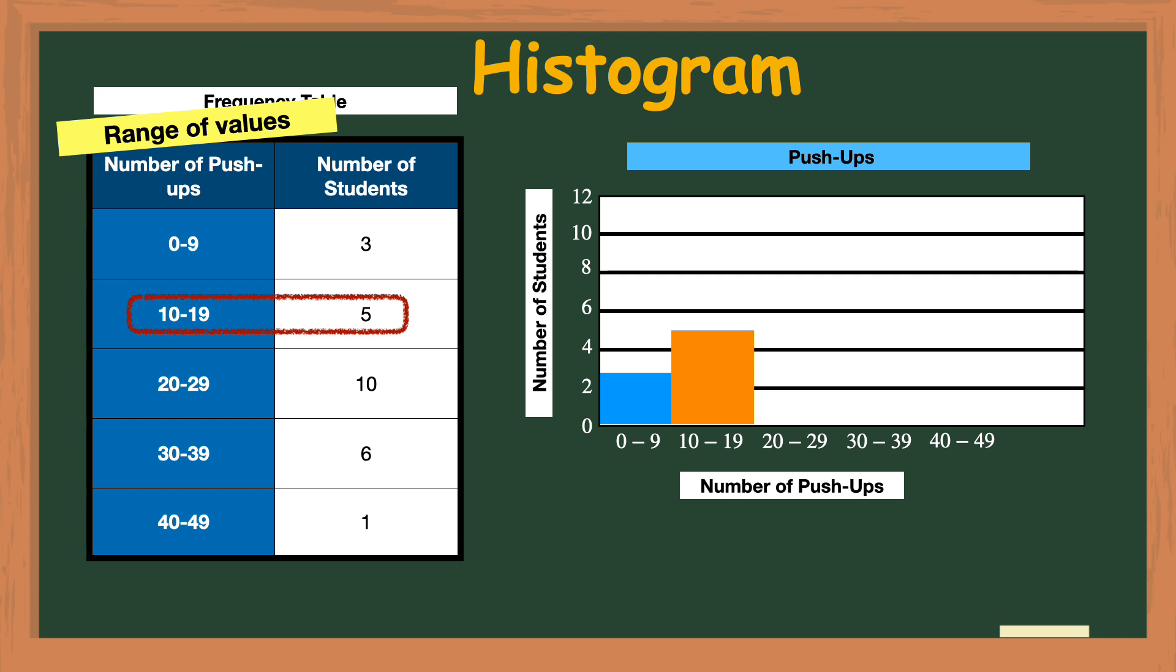It is important to notice here that the two bars are touching each other. In a histogram the bars will always touch each other unless there is a range with zero frequency or in our case zero students. And as you can see in the table all of the ranges have at least one student.